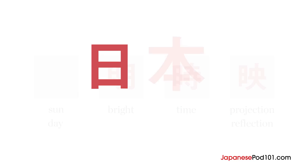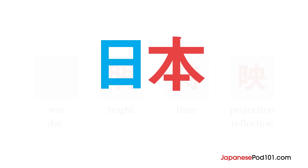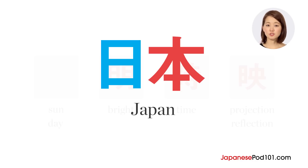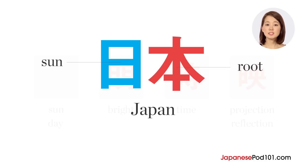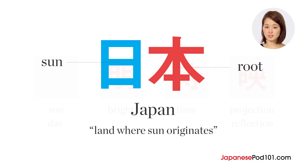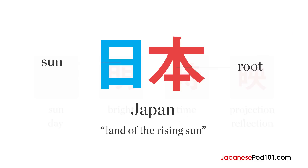The first kanji is actually one of two kanji characters used to write Japan. The first kanji means sun and the second character means root. Since Japan is to the east of China and the sun rises from the east, Japan is written as the land where the sun originates, or more commonly, the land of the rising sun.